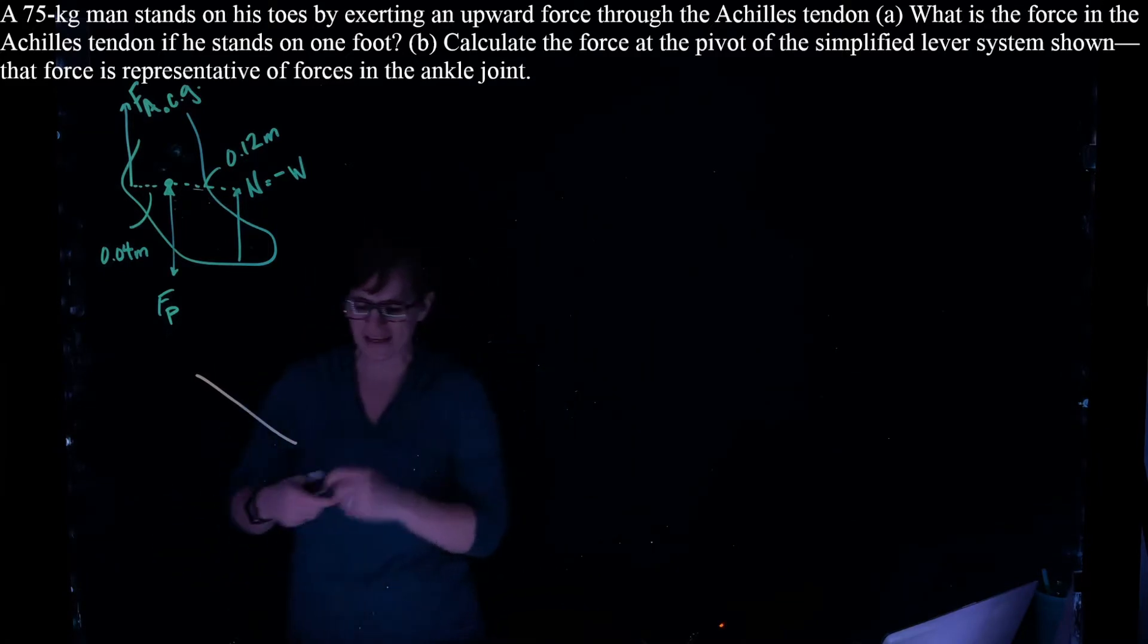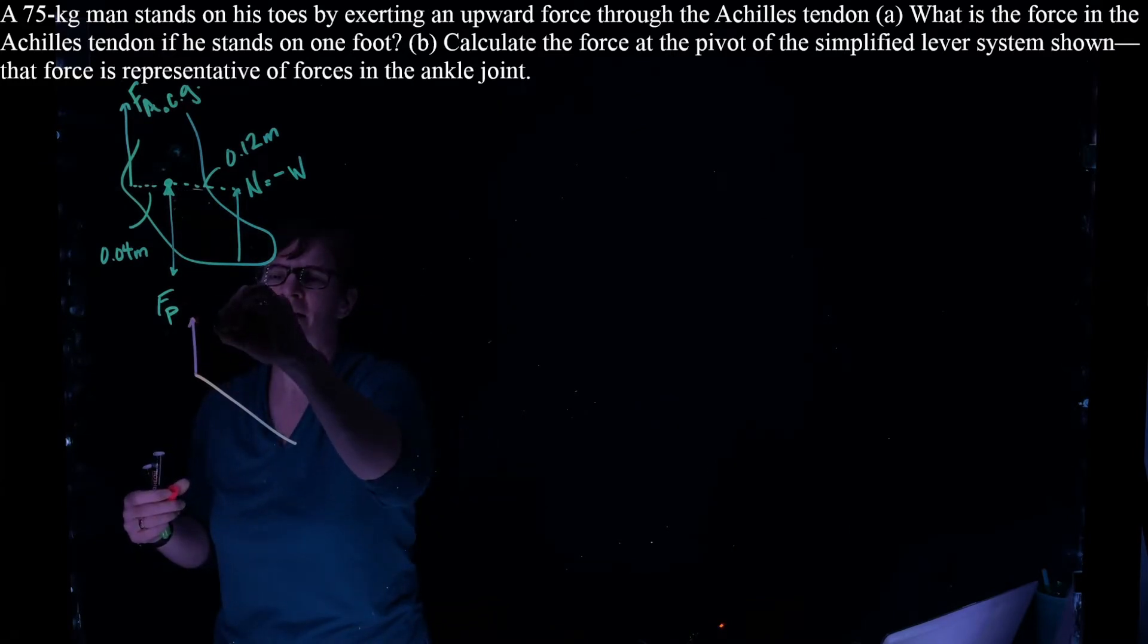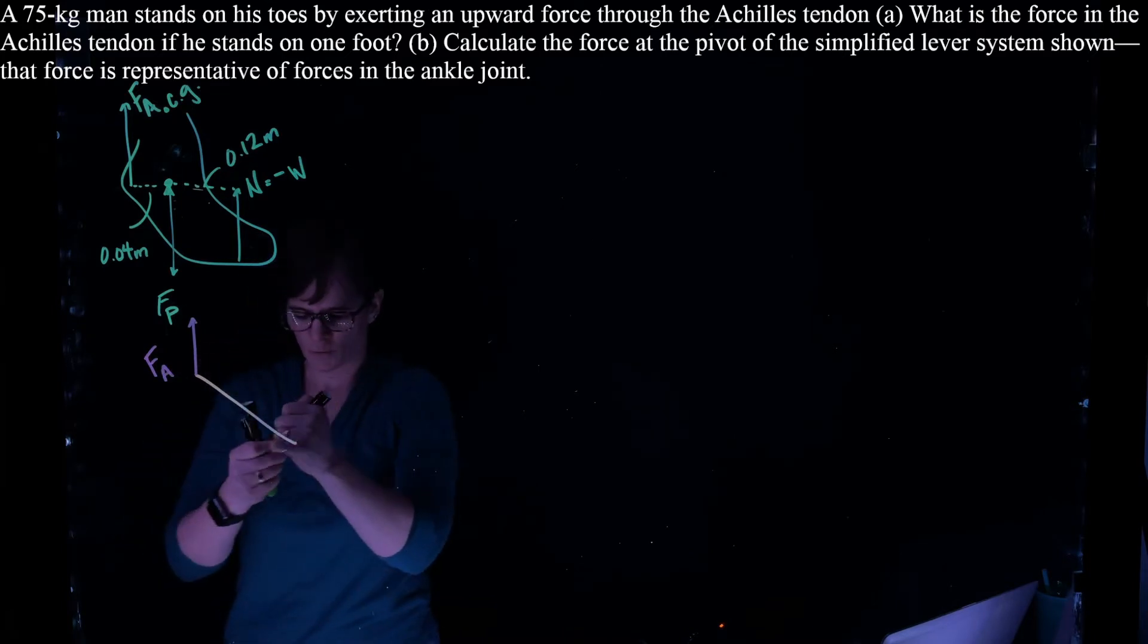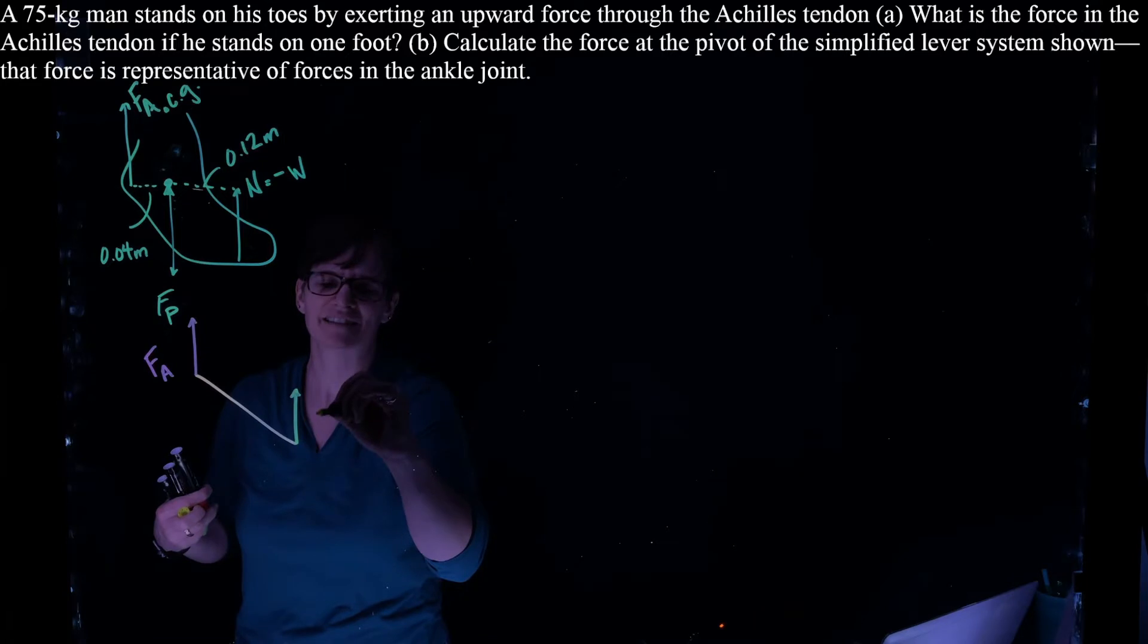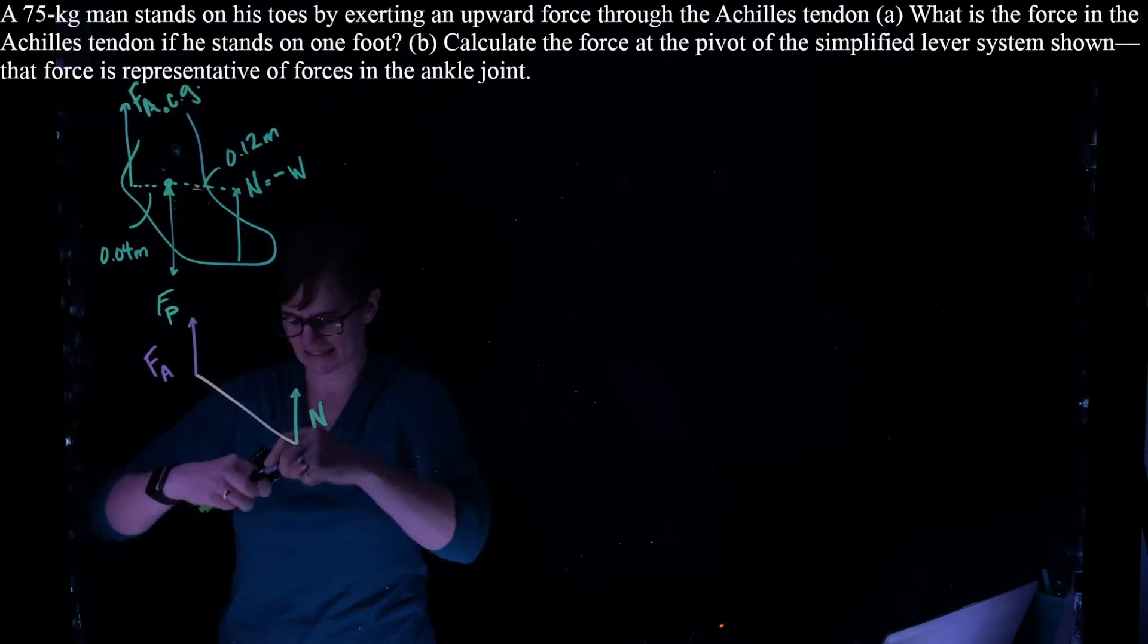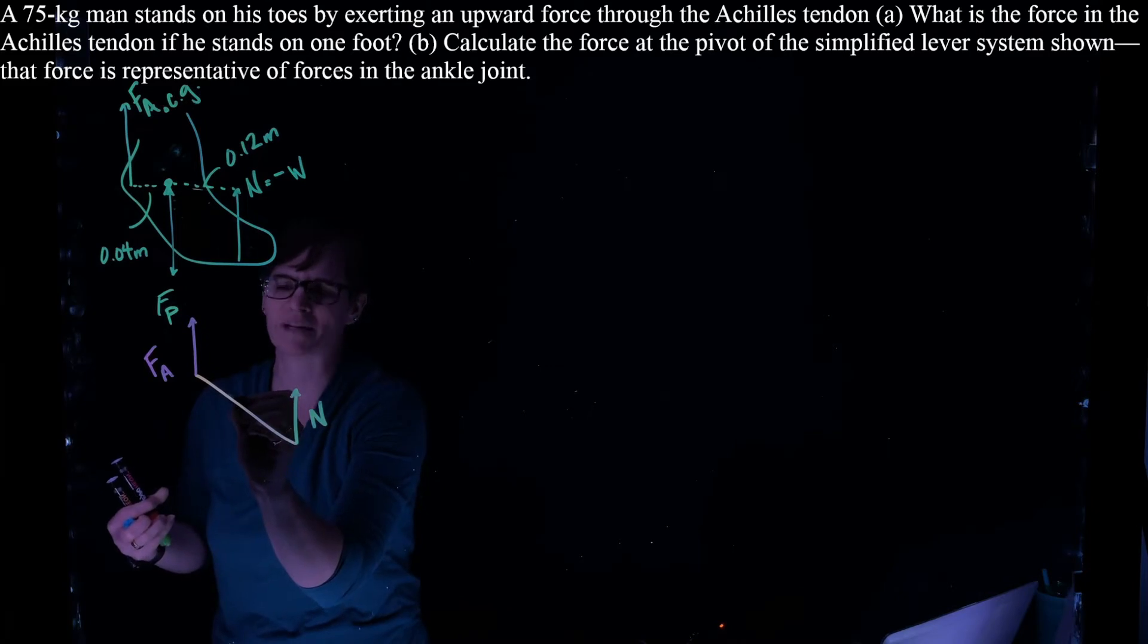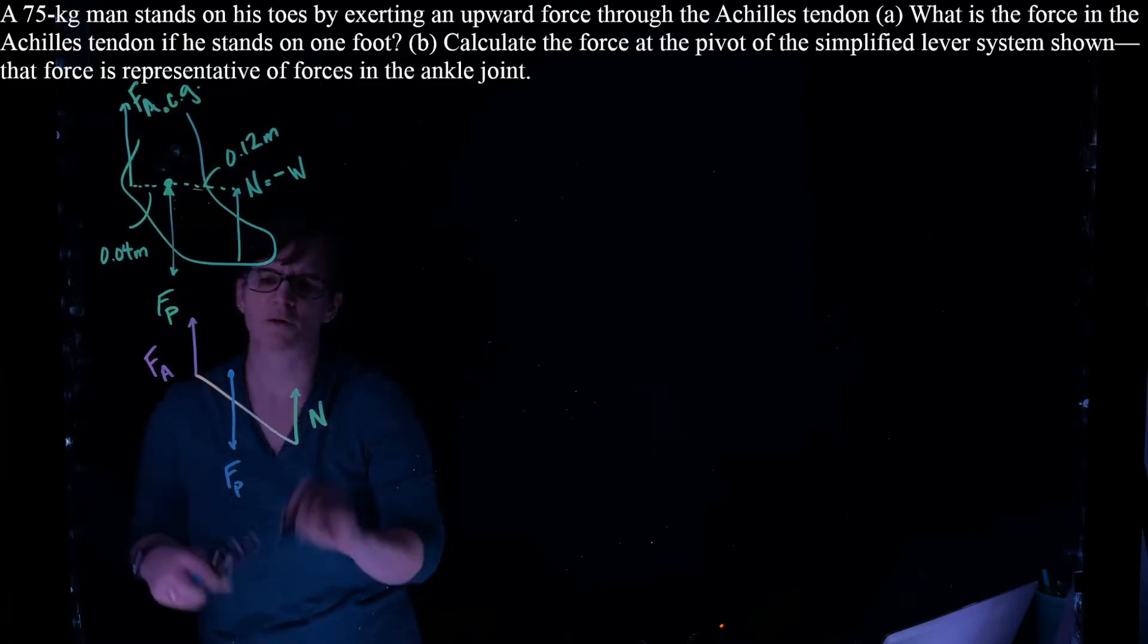We have a force at this point by the Achilles tendon. We have the normal force acting up here at this location. We'll call that N. And then we have that force at the ankle bone here, which we call the force of the pivot.